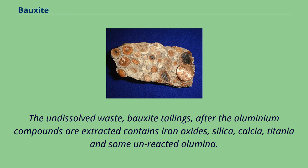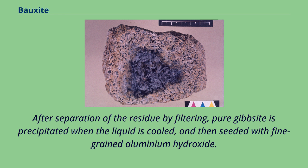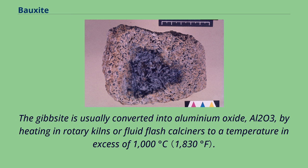The undissolved waste — bauxite tailings — after the aluminium compounds are extracted contains iron oxides, silica, calcia, titania, and some unreacted alumina. After separation of the residue by filtering, pure gibbsite is precipitated when the liquid is cooled and then seeded with fine-grained aluminium hydroxide. The gibbsite is usually converted into aluminium oxide, Al2O3, by heating in rotary kilns or fluid flash calciners to a temperature in excess of 1000 degrees Celsius.